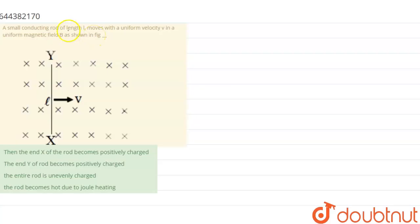The question is: a small conducting rod of length L moves with a uniform velocity V in a uniform magnetic field B as shown in figure. Now we have given some conclusions so we have to check first of all that.